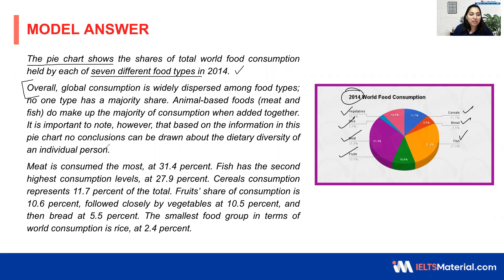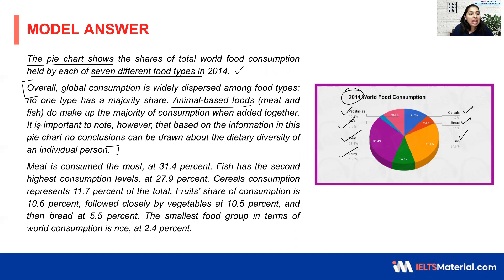Taking up the overall statement, I write about what I can see overall. Overall, global consumption is widely dispersed among food types — no one type has the majority share. Animal-based foods, that is meat and fish, do make up the majority of consumption when added together. It is important to note, however, that based on the information in this pie chart, no conclusions can be drawn about the dietary diversity of an individual person, as this reflects total world population food consumption.